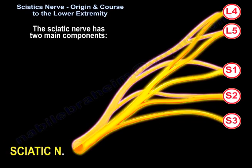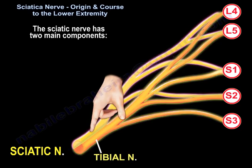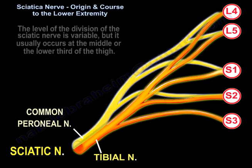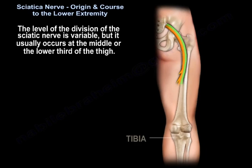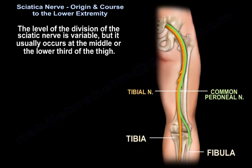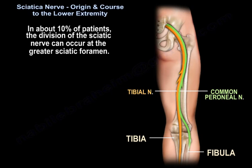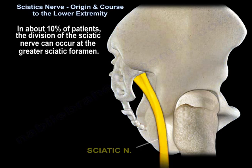It has two main components: the tibial nerve and the common peroneal nerve. The level of the division of the nerve is variable, but it usually occurs at the middle or the lower third of the thigh. In about 10% of patients, the division of the sciatic nerve can occur at the greater sciatic foramen.